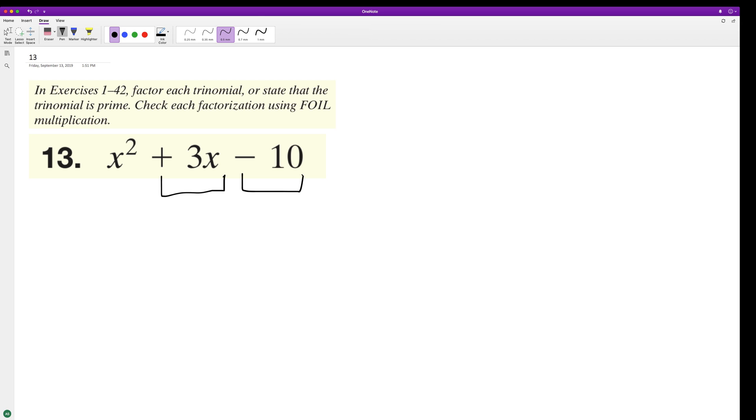So it looks like to me a positive 5 and a negative 2, which equals negative 10. And then 5 minus 2, or adding a negative 2, equals 3. So let's try that.